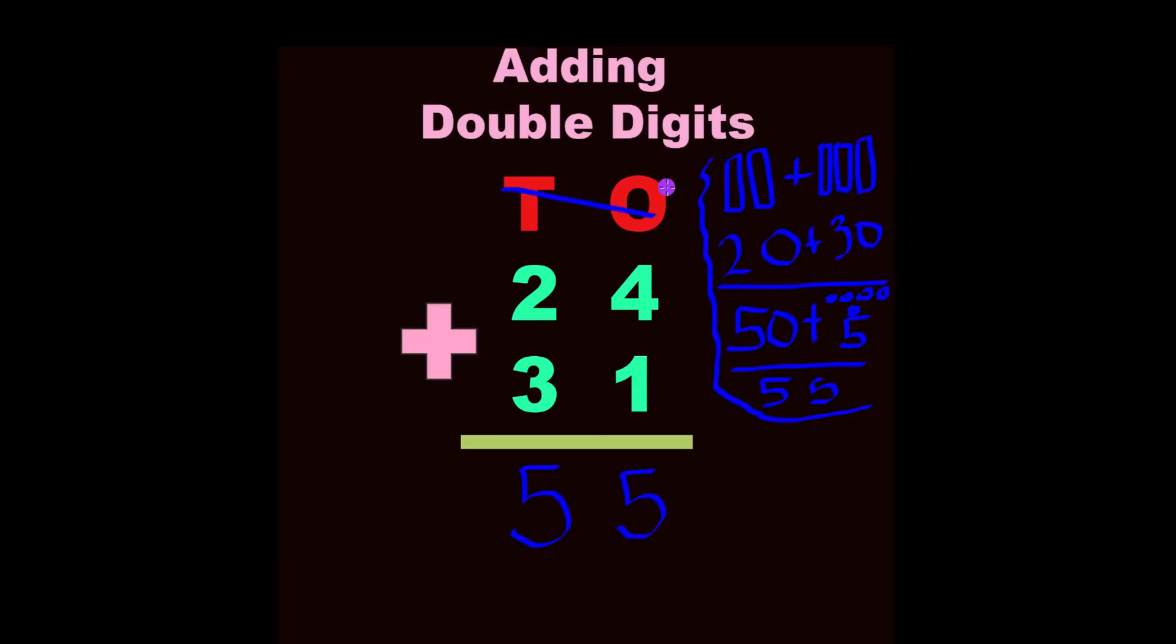So let's pretend like this tens and ones was not up there. This is what your problem will look like. And what you do is you just add the 4 plus 1 straight down, and then you add the 2 plus 3 straight down. Very easy.